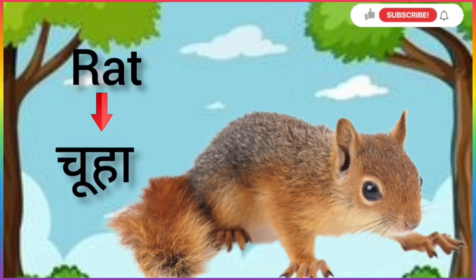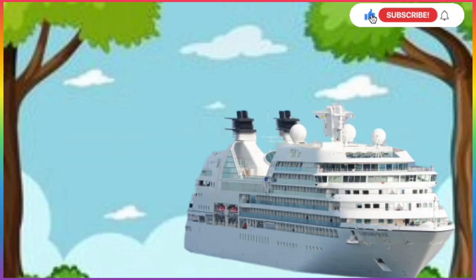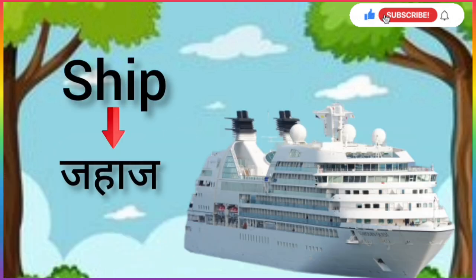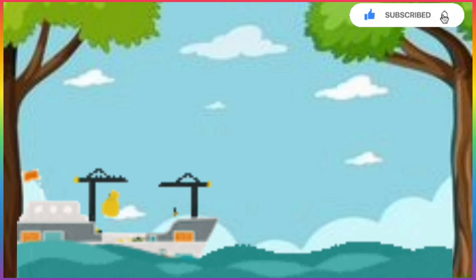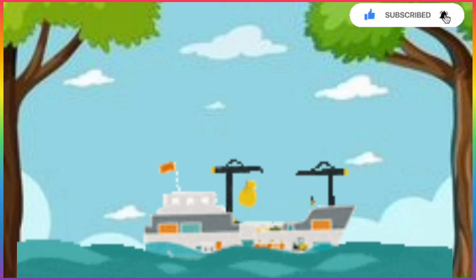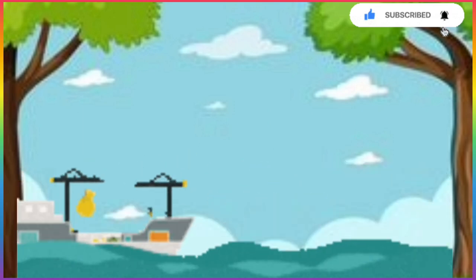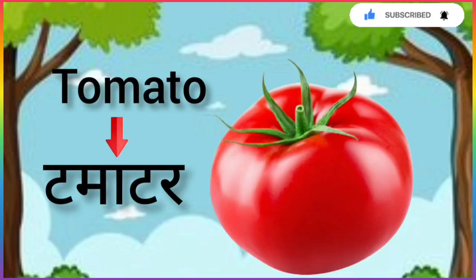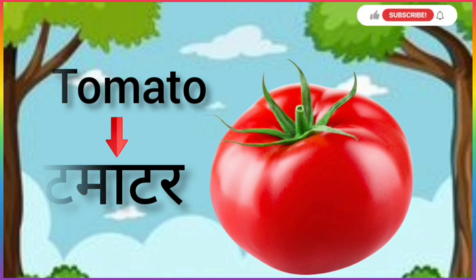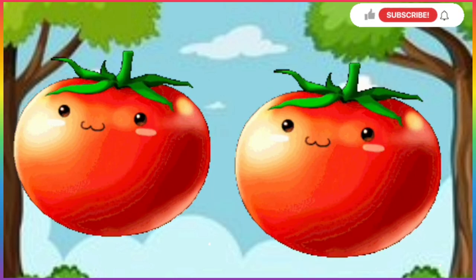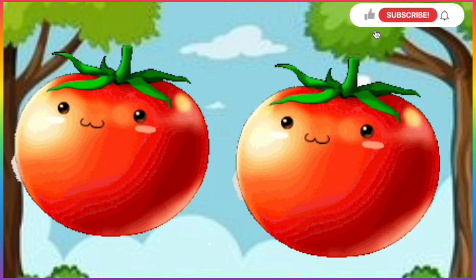R for Rat, Rat means Chuha. S for Sheep, Sheep means Daaj. T for Tomato, Tomato means Tomato.